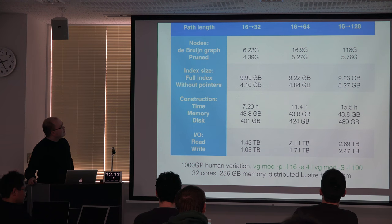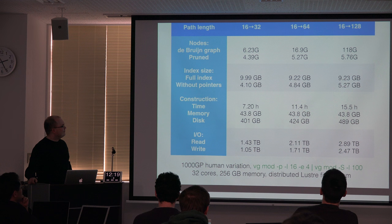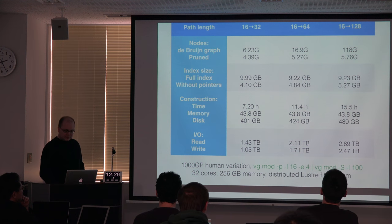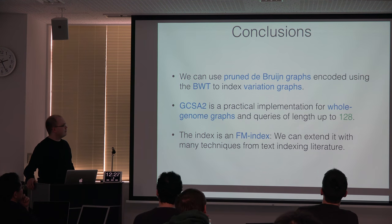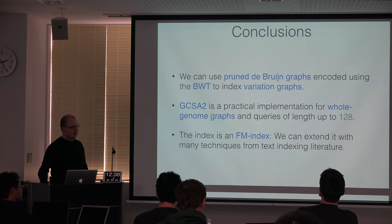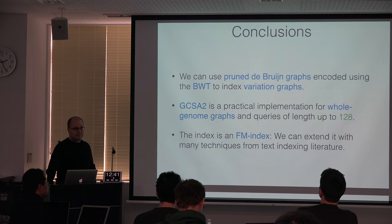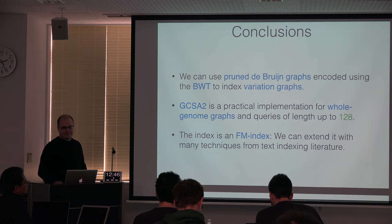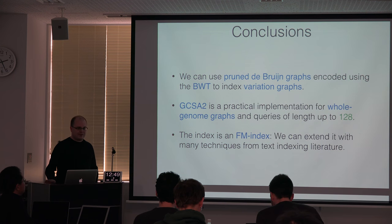So, this is the basic idea: we use pruned de Bruijn graphs encoded with the BWT to index variation graphs. We have a practical implementation which supports queries of length up to 128 without false positives, and it's an FM-index, so there are many things from text indexing literature we can use with it, after generalizing a bit.